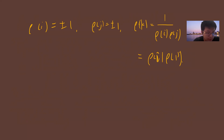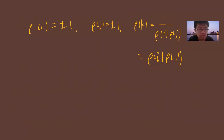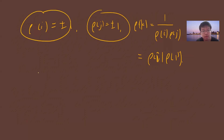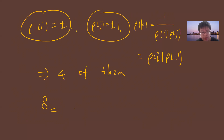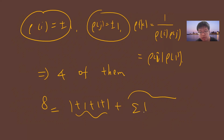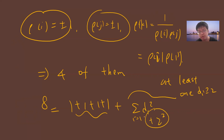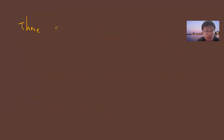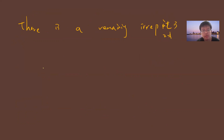How many irreducible representations do we have now? We found four one-dimensional representations. The dimension equation gives: |Q| = 8 = 1² + 1² + 1² + 1² + d₅². This requires d₅² = 4, so d₅ = 2. Since Q is non-abelian, we need at least one representation of dimension ≥ 2, and 2² = 4 works perfectly. So there is one remaining irreducible representation which is 2-dimensional.